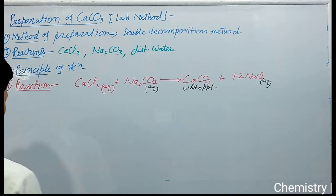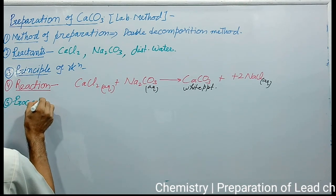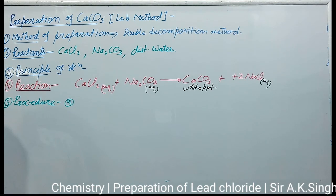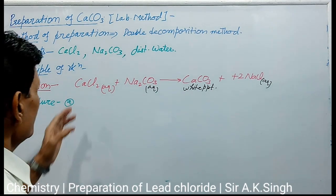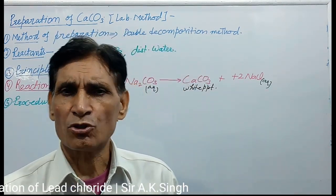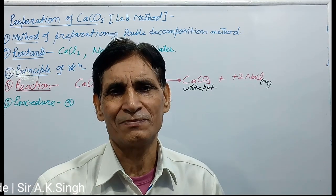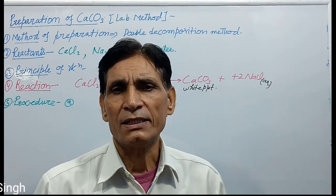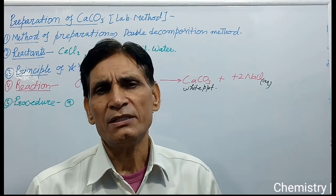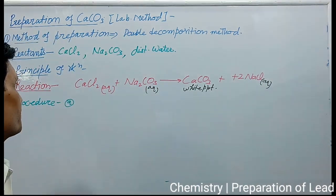Procedure: First point — take a small amount of calcium chloride salt and dissolve it in distilled water in a clean beaker to prepare an aqueous solution of this salt. In another beaker, prepare the aqueous solution of sodium carbonate by dissolving sodium carbonate in distilled water.